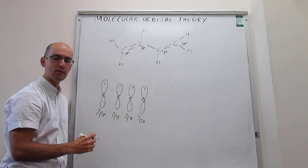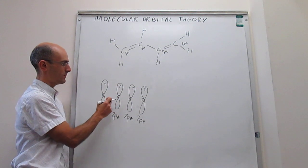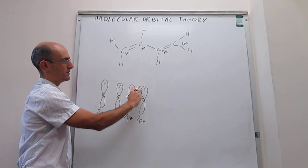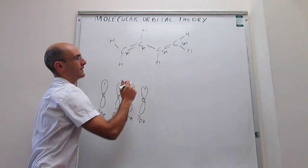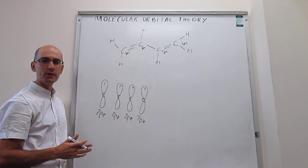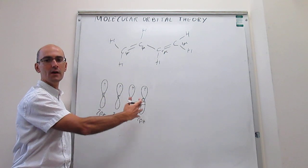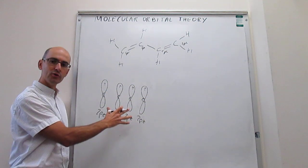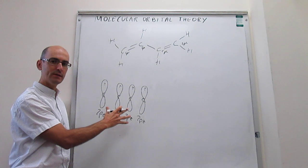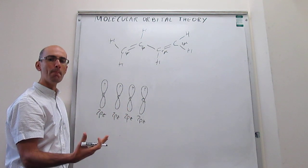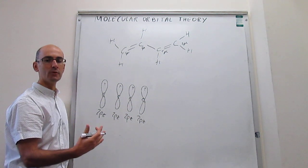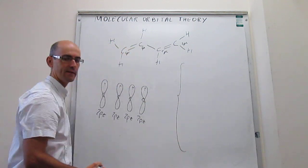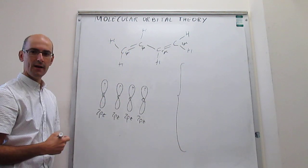Molecular orbital theory is actually able to handle this quite well. The idea is that you mix these four unhybridized 2p_z atomic orbitals to generate four molecular orbitals that now belong to the entire molecule. It turns out that the linear combinations for these four orbitals are actually fairly easy to see.